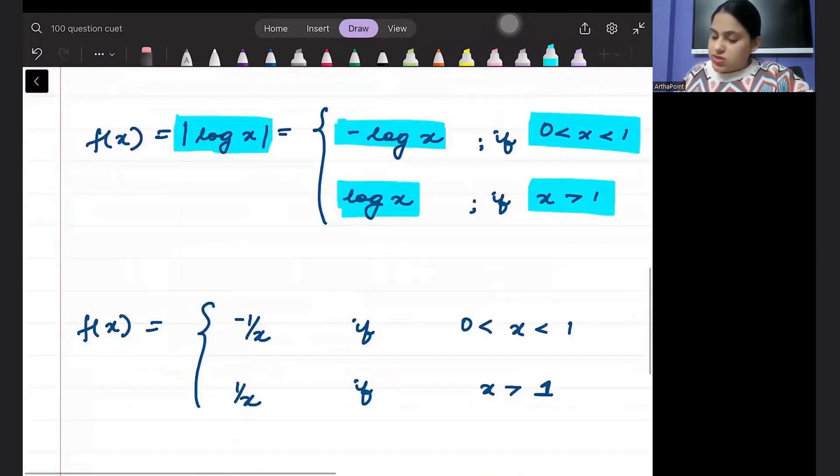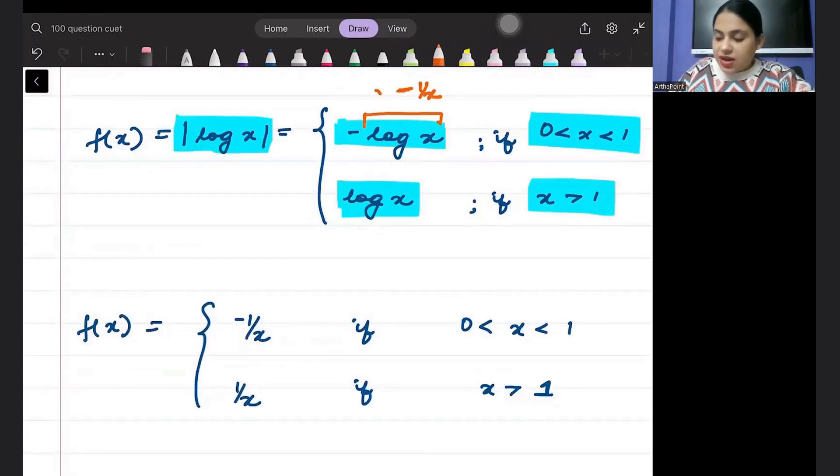Now, I will differentiate this. So beta, differentiation of log x is 1/x, but with the minus sign out front. So I will get -1/x. This is when x is between 0 to 1 and I will get 1/x if x is greater than 1.